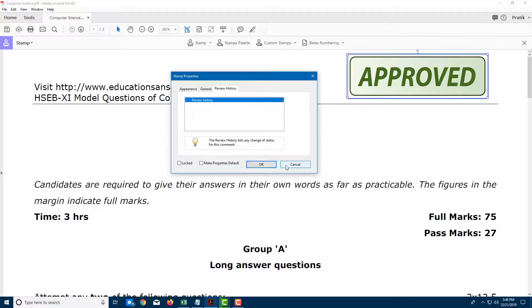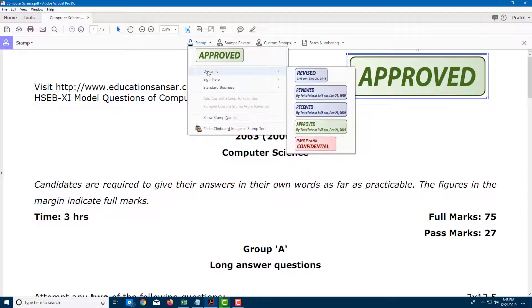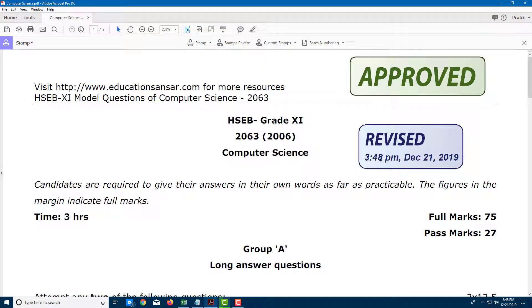There's also a dynamic stamp like Revised. Once you click on this, you can see that the date and day appears as well, along with the timestamp right there.